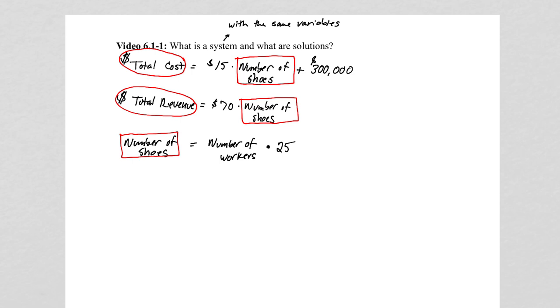And then in the third equation, we have the number of workers. And that is a variable which doesn't show up in the other two equations. So we have three equations here. Two out of the three have the same variables. The third equation only has one of the same variables. So this is not quite a system of equations because we do not have equations with the same variables.